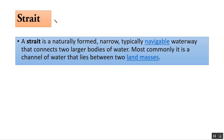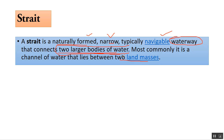Today's topic is strait. So what is meant by strait? A strait is a naturally formed, narrow, typically navigable waterway that connects two larger bodies of water. Most commonly it is a channel of water that lies between two land masses.